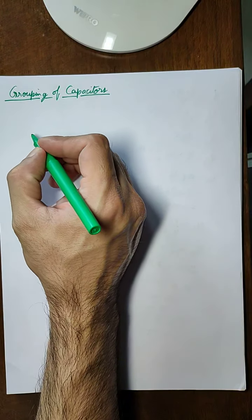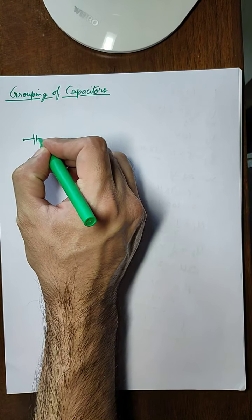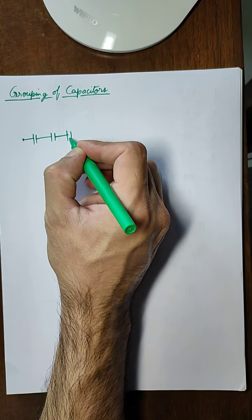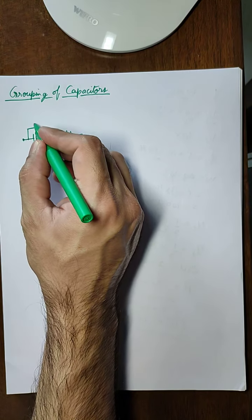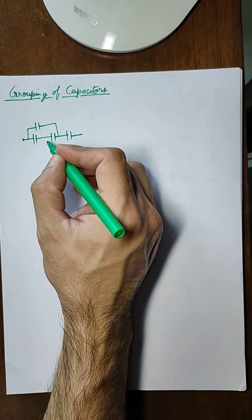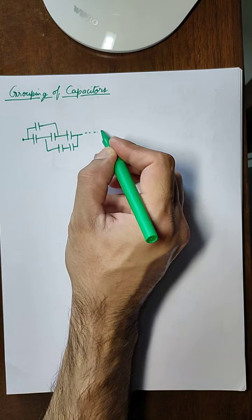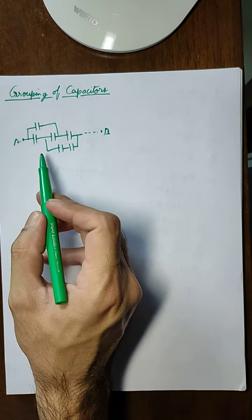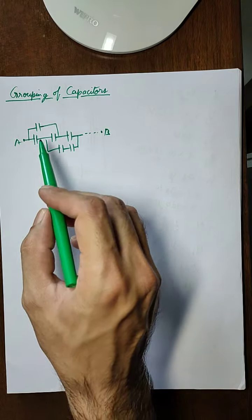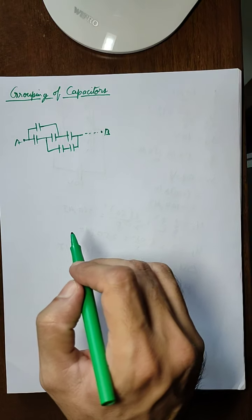In this video we will study about the grouping of capacitors — that is when one or more than one capacitors are joined together, it is called grouping of capacitors. Now these capacitors can be joined in several ways. To take a generalization, let us say that between two terminals A and B some capacitors are joined in a random way.